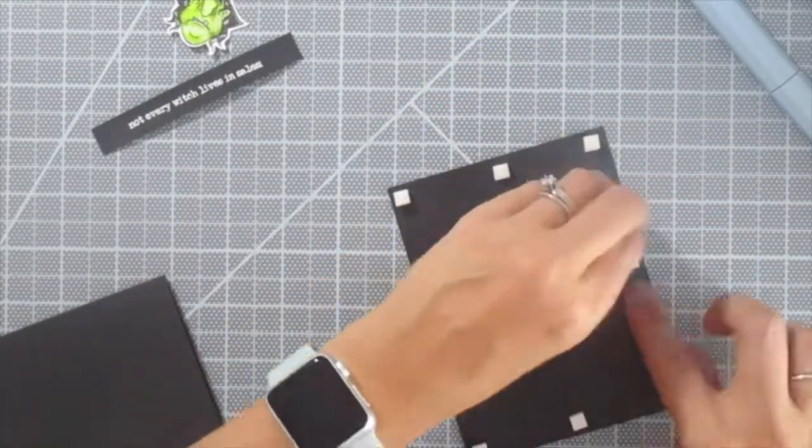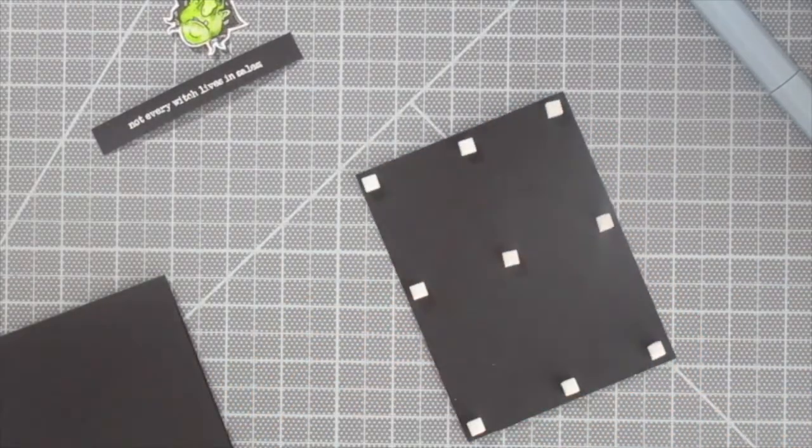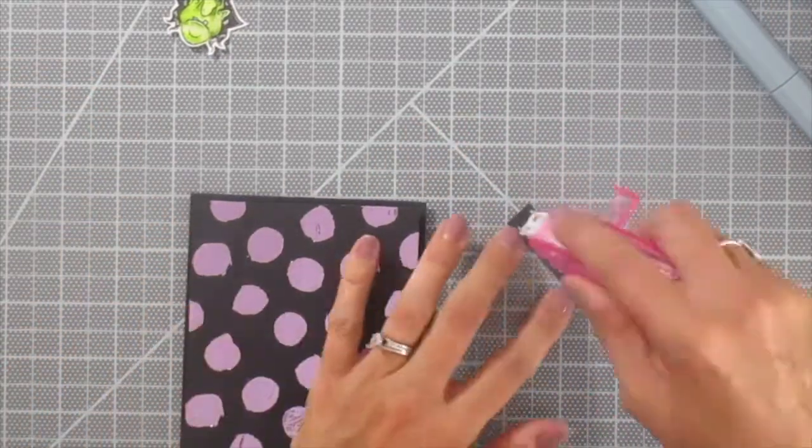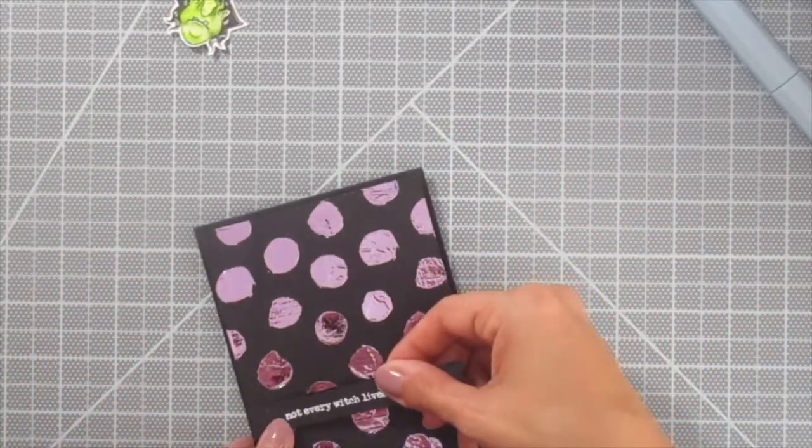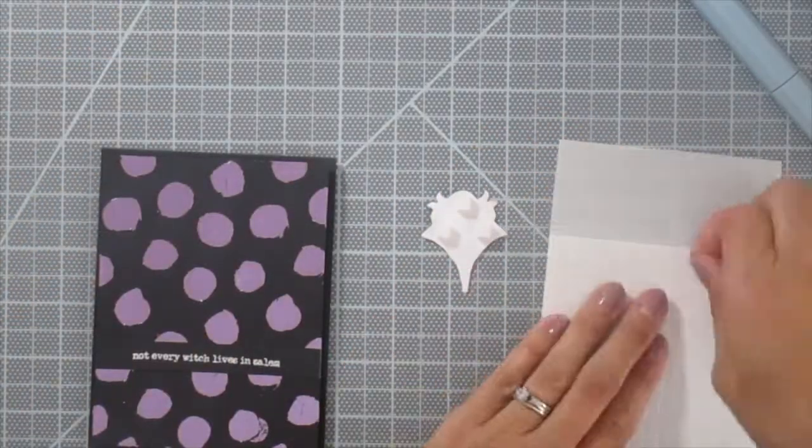And so now I'm going to use some foam squares from Thermo Web. This is going to get it a little bit of dimension. You could do it flat if you want, but I love cards that have a lot of dimension. I know that sometimes it can be a little more costly to mail them, but I think it's totally worth it because it just gives something extra to that card.